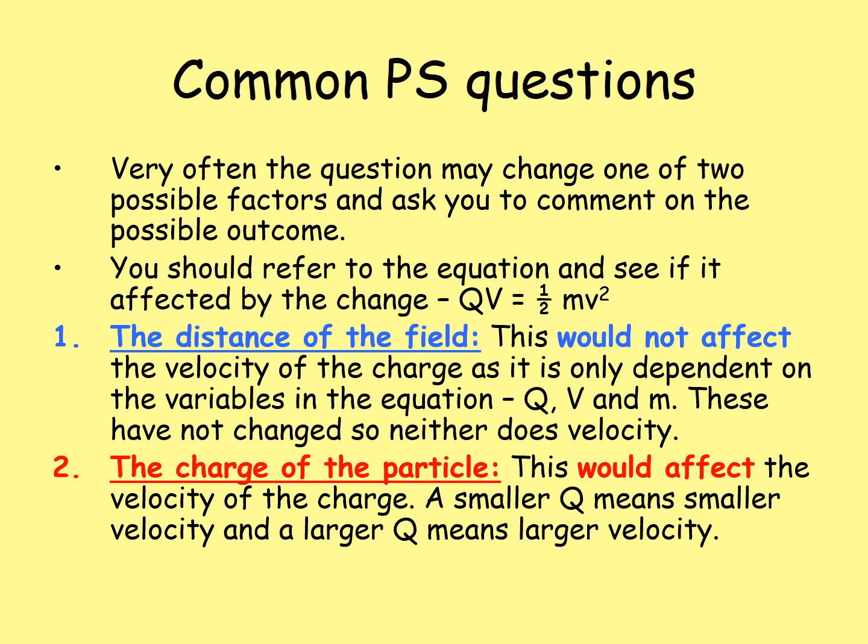The charge of the particle will affect the velocity: a smaller charge means smaller velocity, and a larger value of Q means a larger velocity. Also note that some charges have the same magnitude of charge but different masses — a larger mass means the velocity will be much smaller.